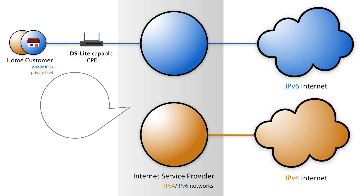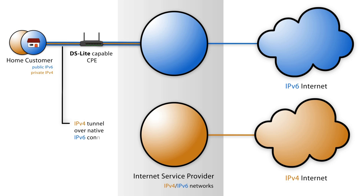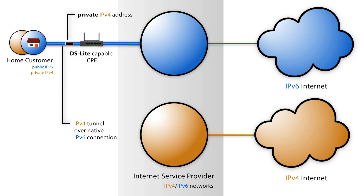They also need a private IPv4 address to be able to connect to the IPv4 Internet. The ISP sends the customer one private IPv4 address through a tunnel over the IPv6 connection between the customer's network and the provider's network.